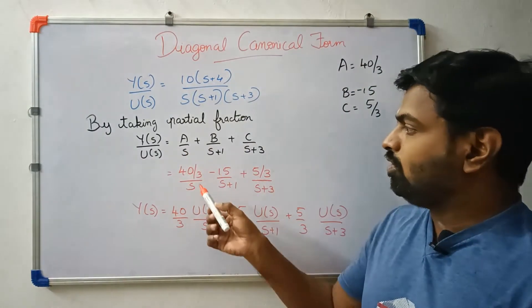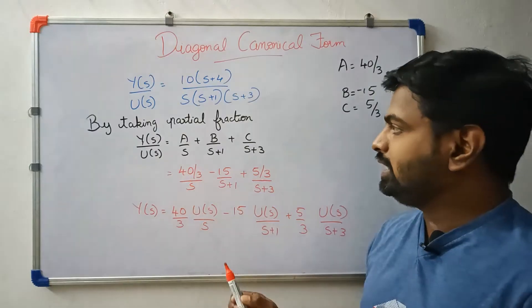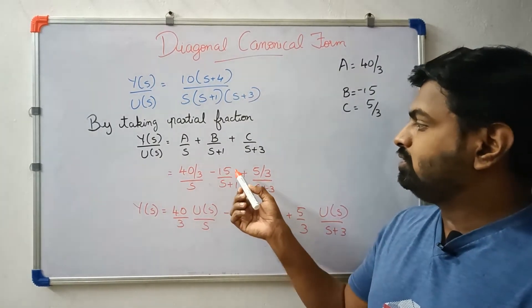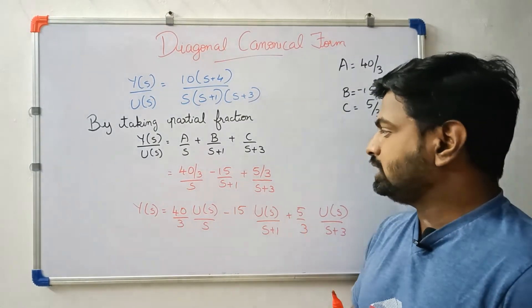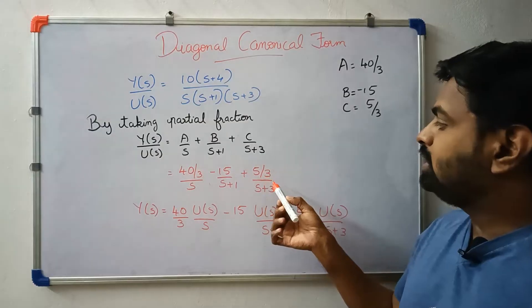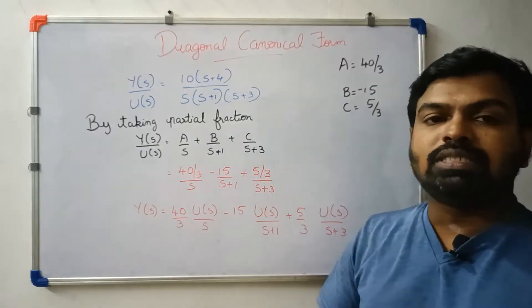The partial fraction result is: 40/3 by s, minus 15 by (s plus 1), plus 5/3 by (s plus 3).